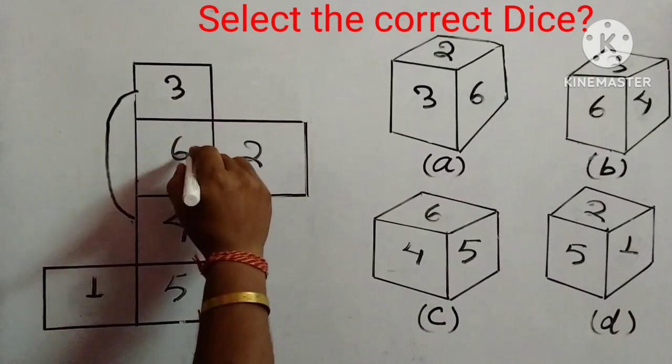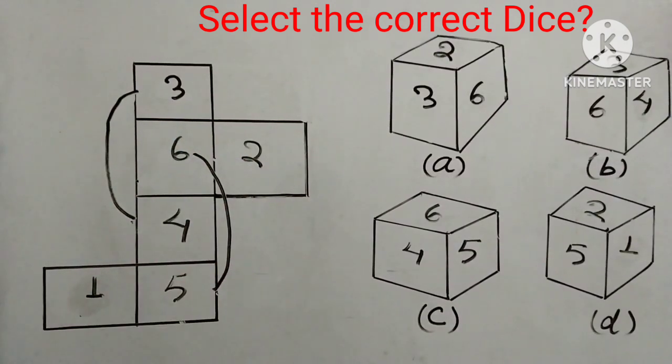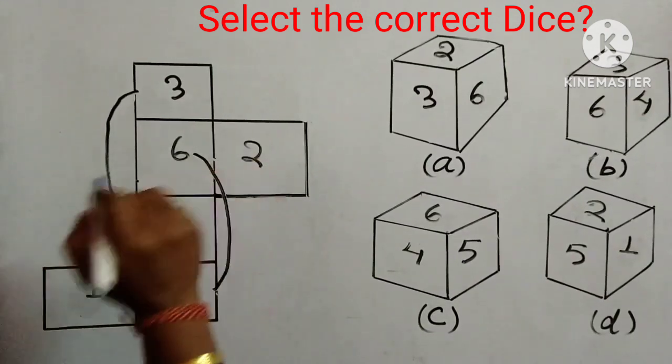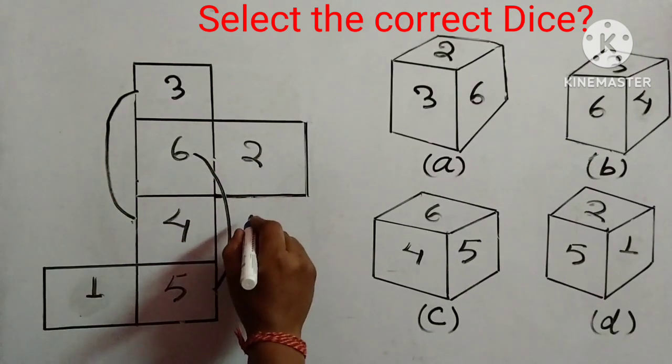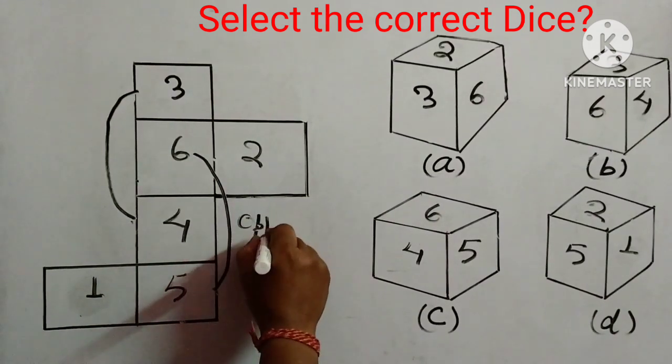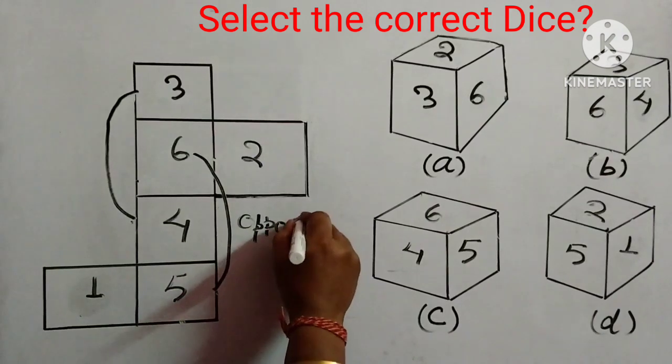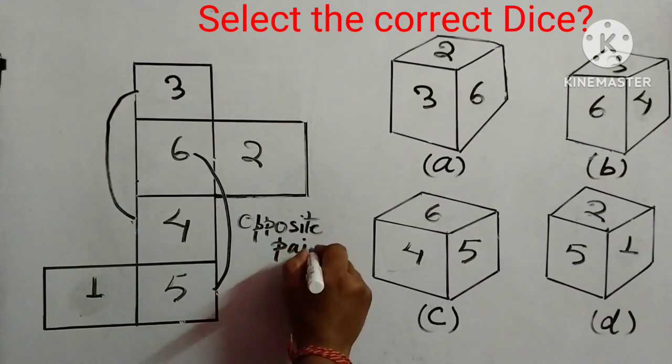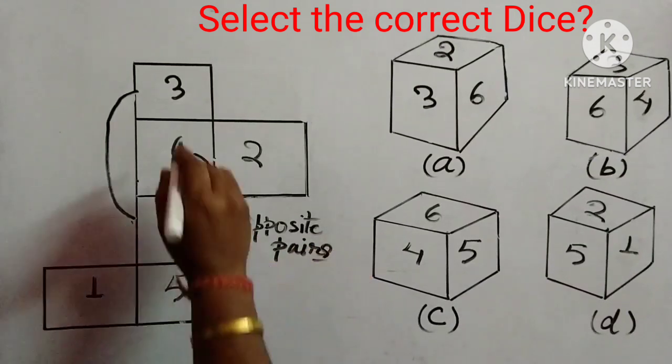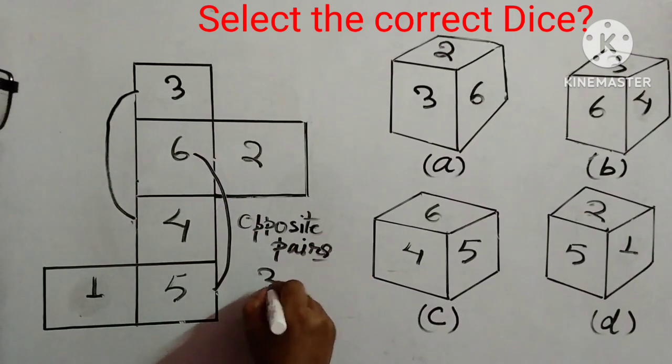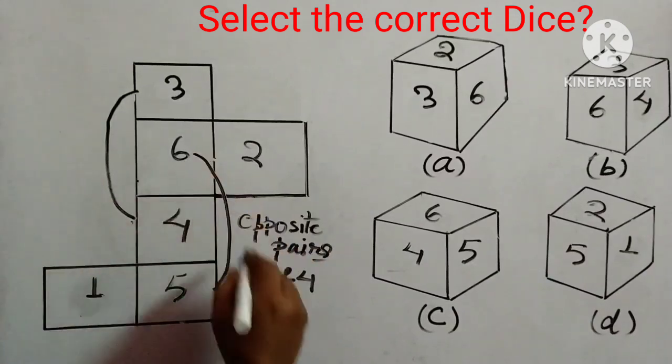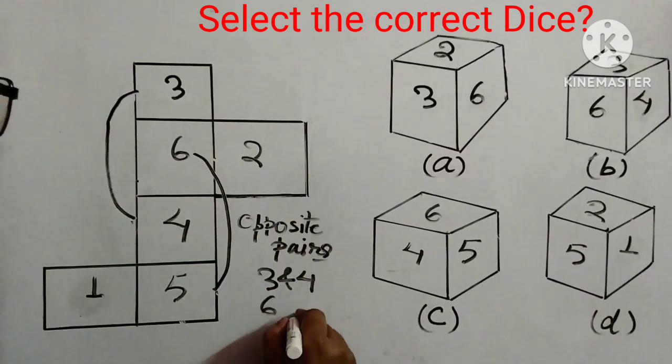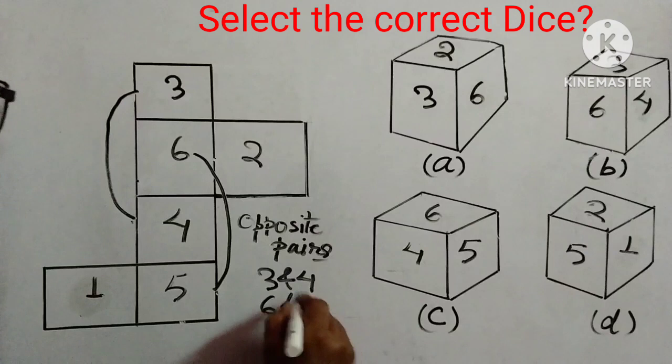So, 3 is opposite of 4 and 6 is opposite of 5. These are the opposite pairs which is left 2 and 1. So, 2 is opposite of 1. So, we will first of all, write down the opposite pairs. So, opposite pairs, which one are the opposite pairs, 3 and 4, then 6 and 5, and 1 and 2.